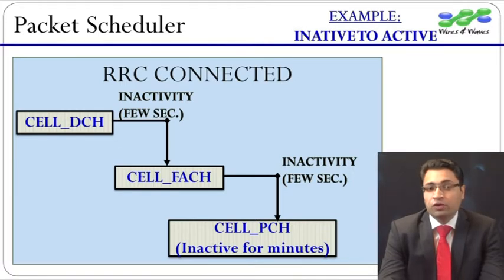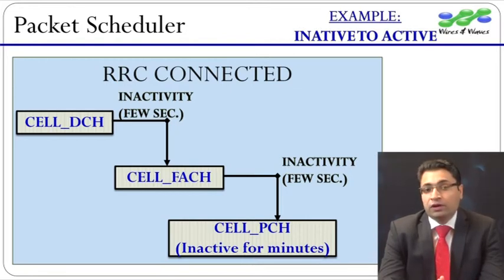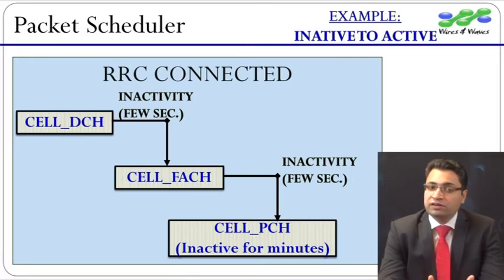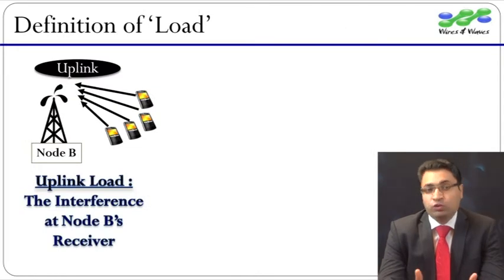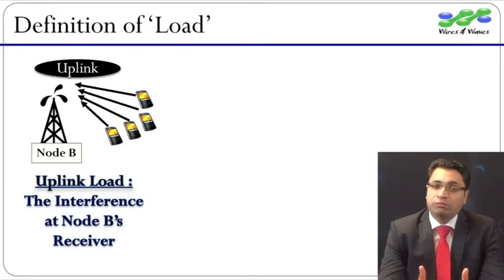In order to understand this, we can think of our laptop's behavior when we don't use it for a few minutes. Now, one of the key tasks of RRC management is to keep an eye on the current load. Load in CDMA is measured in terms of power. Let us discuss a cell as shown in this picture. As the number of active users in the cell increases, the received power at Node B's receiver also increases.